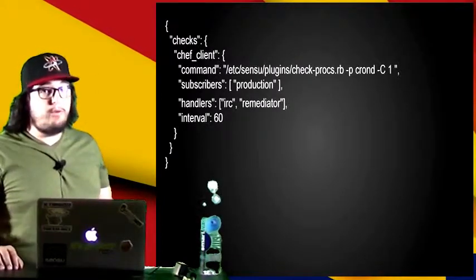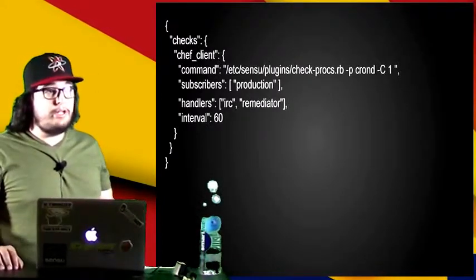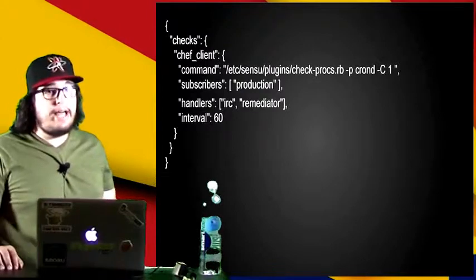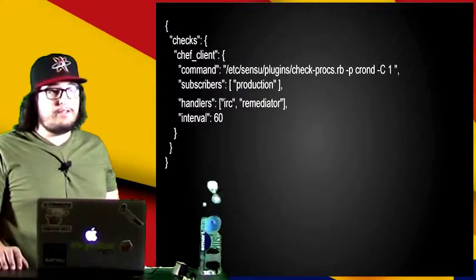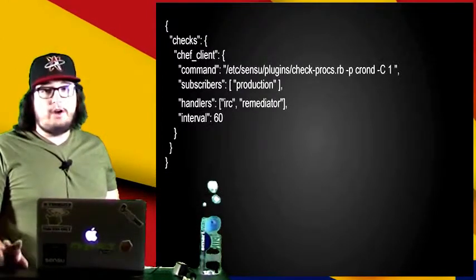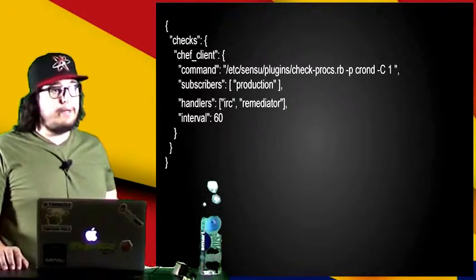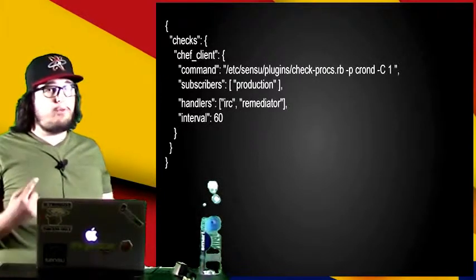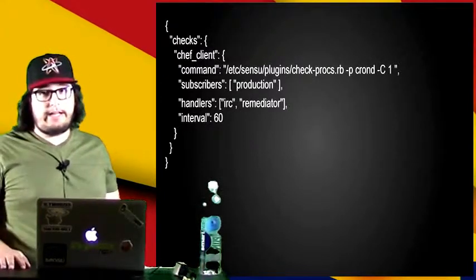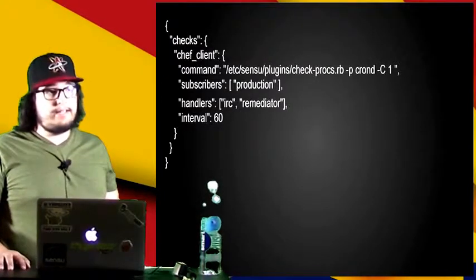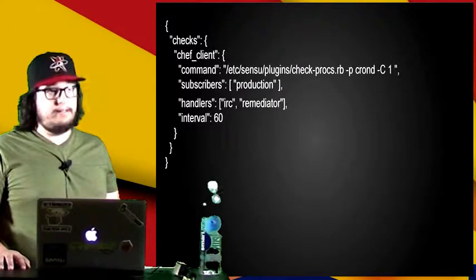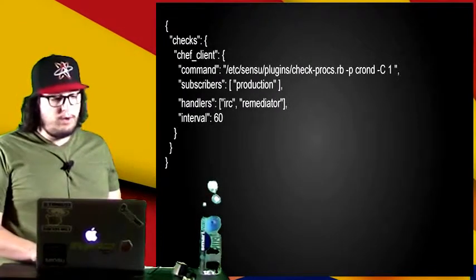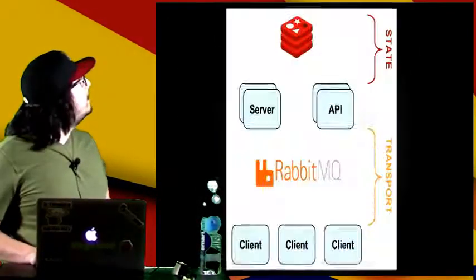There are multiple handlers. So if we want to push a notification out to IRC saying cron-d is not running on this server, go ahead and fix it. But even better, we have a remediator that can go out and say cron-d is not working — kick it, is it working now? Great. So we'll just easily restart a service automatically.